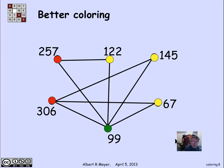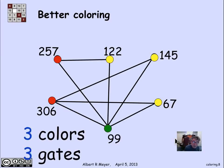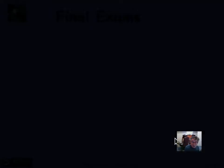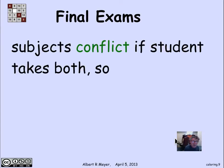That was not the smartest way to color. A better coloring is shown here — you can check that every two adjacent vertices have different colors, and it uses only three colors: red, yellow, and green. So three gates suffice, giving a better schedule.